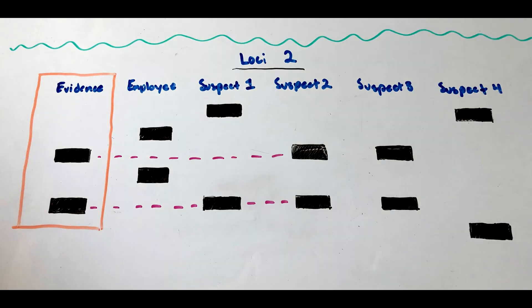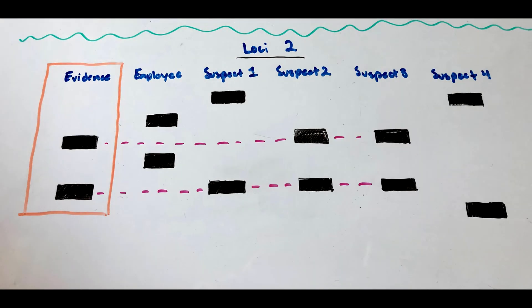Suspect 2 and the evidence match, so suspect 2 could have committed the crime. Suspect 3 also matches the DNA evidence because the bars are in the same positions.